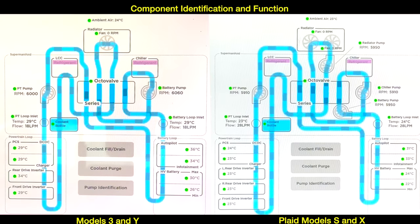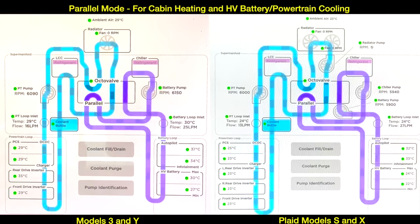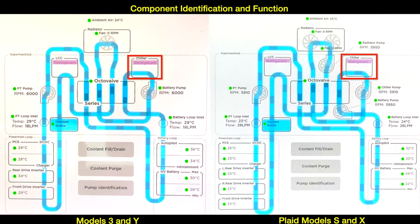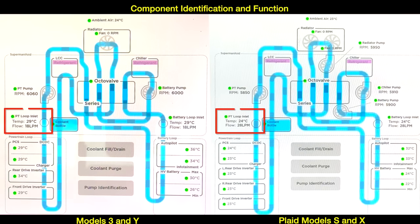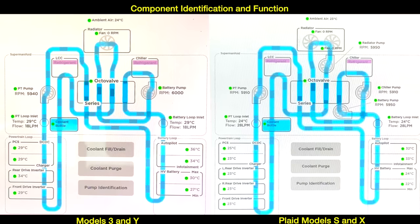There are two separate coolant loops: a powertrain loop and a battery loop. These loops can be put in series or in parallel with each other. The super manifold has a liquid-cooled condenser that can transfer heat energy from the refrigerant to the coolant. It also has a chiller that can transfer heat energy from the coolant to the refrigerant. There is a radiator to transfer heat energy between the air and the coolant. The Model S and X Plaid have an extra large radiator with dual fans. We also have temperature and flow rate sensors at the powertrain loop inlet and the battery loop inlet, and we can monitor pump RPM, fan RPM, and individual component temperatures.